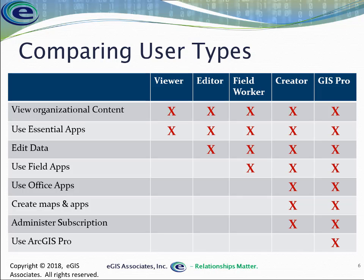The field worker is another new type that expands on what the editor can do by granting access to the field apps. As the name implies, it's really designed for those out in the field doing inspections, data collection, and those kinds of activities. The creator is the equivalent of the old Level 2 — it has all the capabilities of the other three, plus access to the Office Apps for ArcGIS. A creator can also create new maps, new apps, upload new files, and create content in your ArcGIS Online subscription. They also potentially have the capability of administering the subscription — you can assign a creator the admin role, meaning they can add new users and assign licenses.